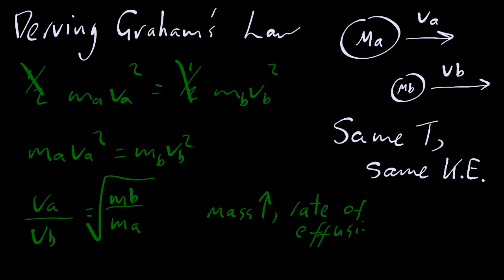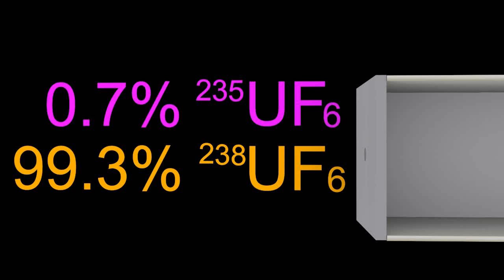So as the mass of a molecule goes up, the rate of, well, he says effusion, but it seems to apply equally to diffusion, goes down. Heavier gases move slower. Faster gases are going to be the lighter ones.